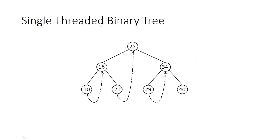Now let us see an example of single threaded binary tree. We have nodes 25, 18, 10, 21, 34, 29, 40. The in-order traversal starts at the leftmost node, which is 10, then 18, 21, 25, 29, 34, 40. In a binary search tree, in-order traversal gives the sequence in ascending order.